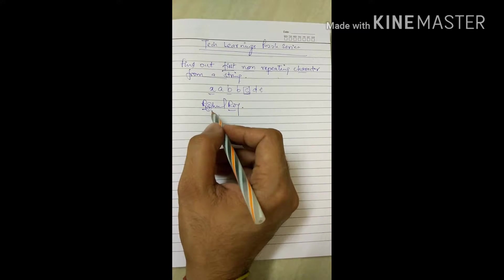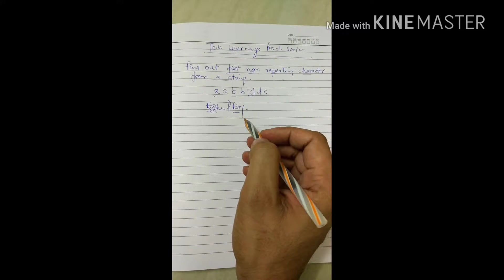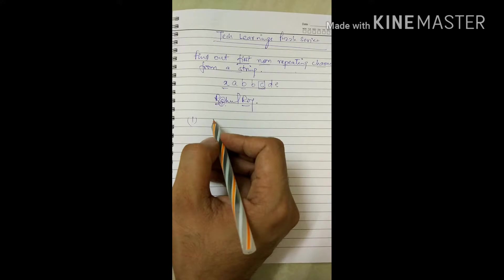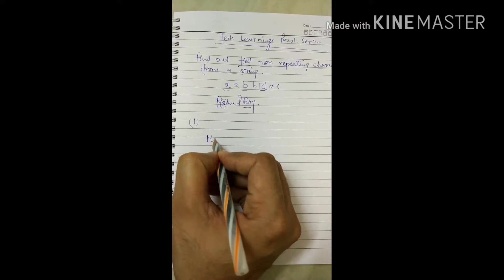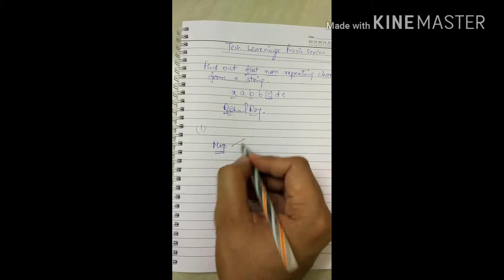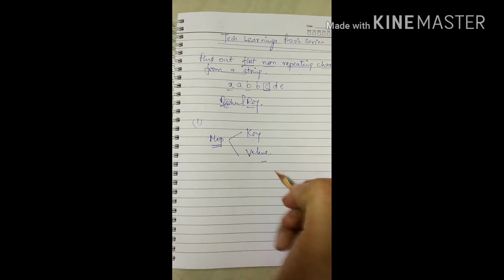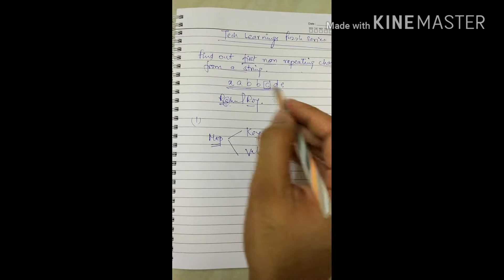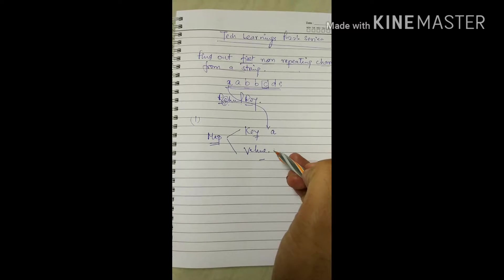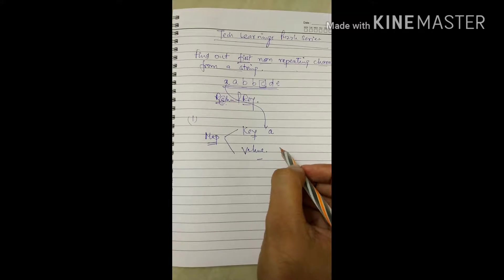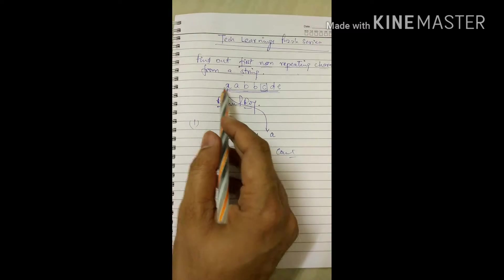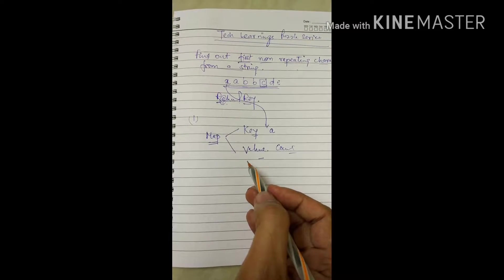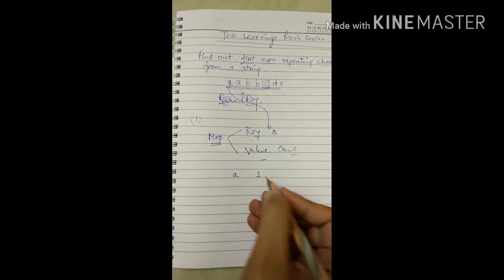The problem is to find out the first non-repeating character. This can be solved in a number of ways. One way is to use a map — the map is going to contain a key and a value. You traverse your string from left to right, store the character in the key, and store the count in the value. Suppose the first character is 'a' — you check whether it is present in the map or not. If it is not present, put it in the map with count one.